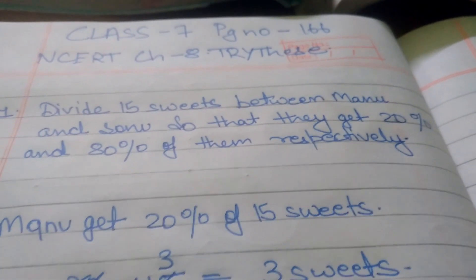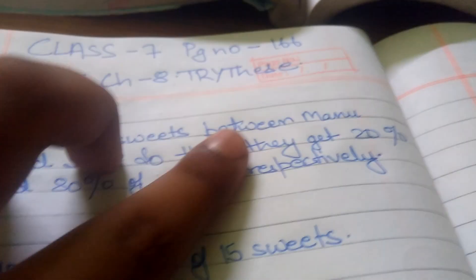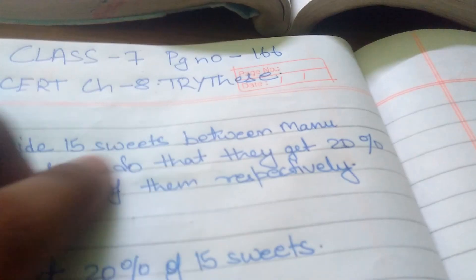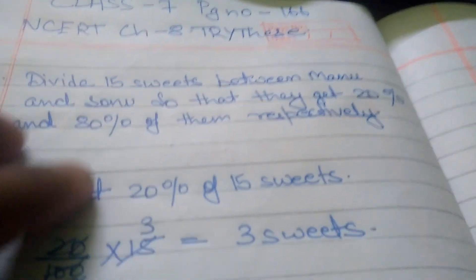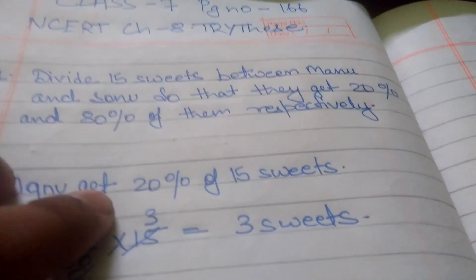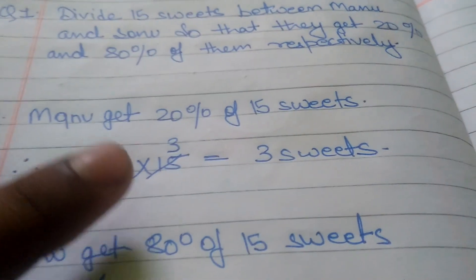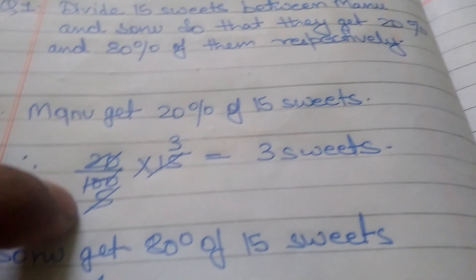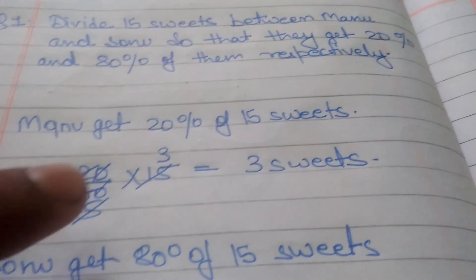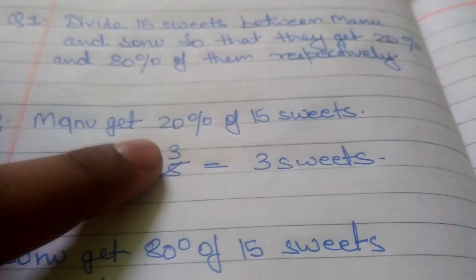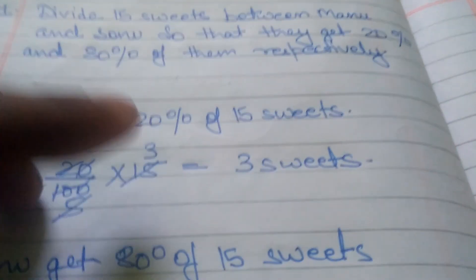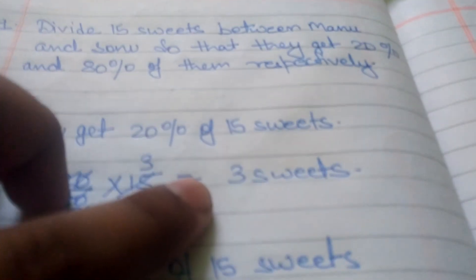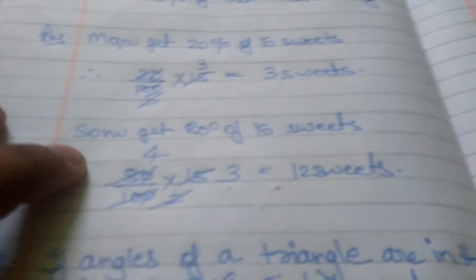Here it is given that Manu has 20% of 15 items and Sonu has 80% of 15 items. First, Manu gets 20% of 15 items, which means 20 upon 100 multiplied by 15. 100 will be divided by 20, which is 5 times, and 15 will be divided by 5, which is 3 times. So Manu gets 3 items — 20% of 15 items equals 3 items.